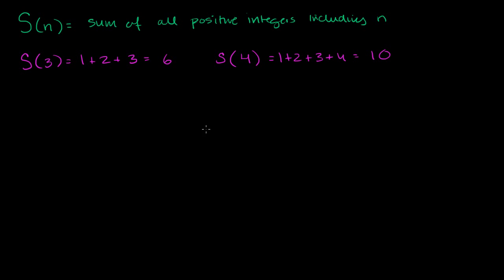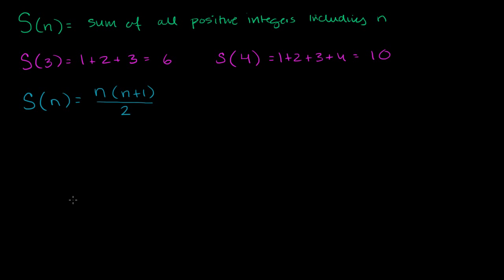Now what I want to do in this video is prove to you — and there are actually multiple ways to prove this — that I can write this as a function of n. The sum of all the positive integers up to and including n is equal to n times n plus 1, all of that over 2. The way I'm going to prove it is by induction. This will be a proof by induction.